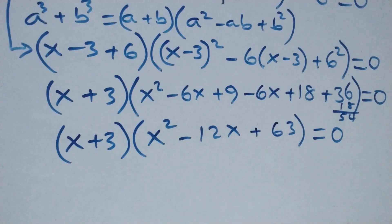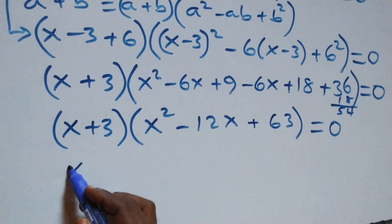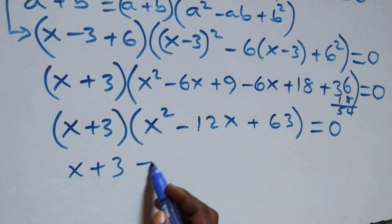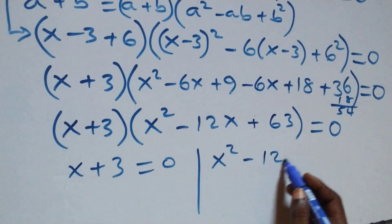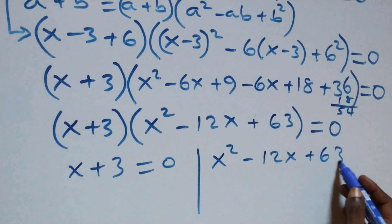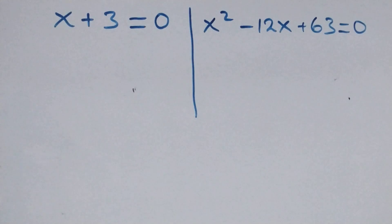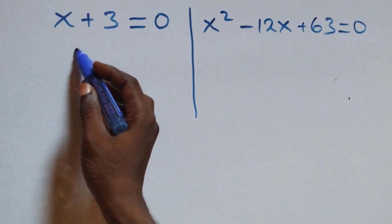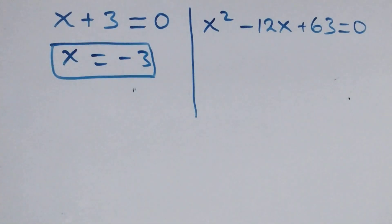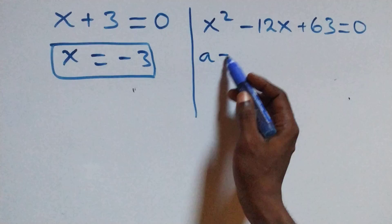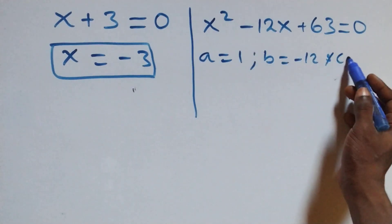We have two possible sub-cases: x plus 3 equals 0, or x squared minus 12x plus 63 equals 0. Solving the first gives x equals minus 3, which is a real solution. For the quadratic, a equals 1, b equals minus 12, and c equals 63.